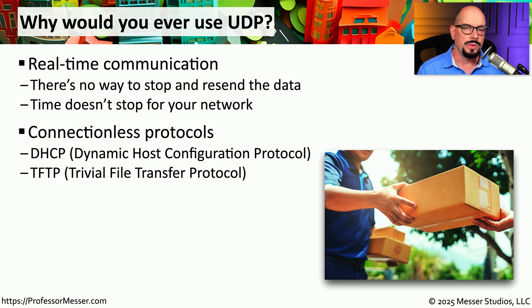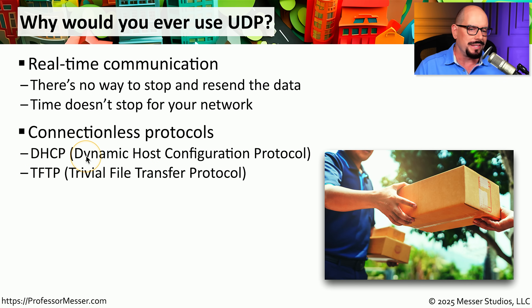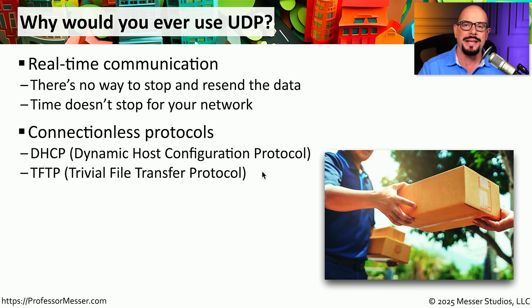Other protocols also work well with UDP where low overhead is needed and it's acceptable if data doesn't arrive — if there's a problem, the application simply performs the process again. Good examples of connectionless protocols using UDP include DHCP, or the Dynamic Host Configuration Protocol, commonly used to automatically assign IP addresses on network devices, and TFTP, or the Trivial File Transfer Protocol, which sends small amounts of data and doesn't require retransmission capability.